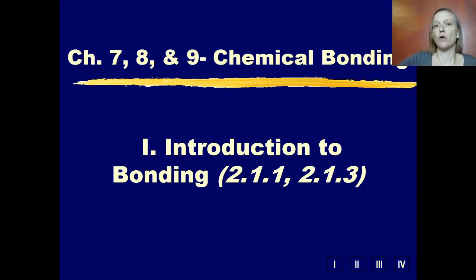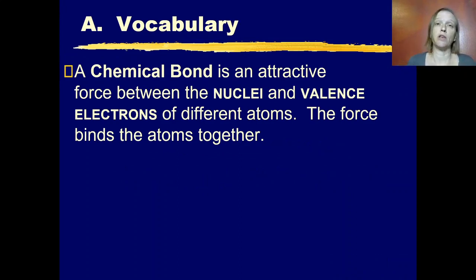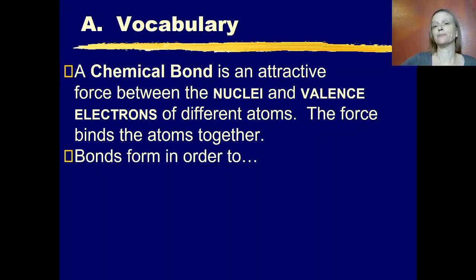The first thing we need to have is a definition for a chemical bond. A chemical bond is an attractive force between the nuclei and the valence electrons of different atoms, and then that attractive force holds or binds those atoms together.